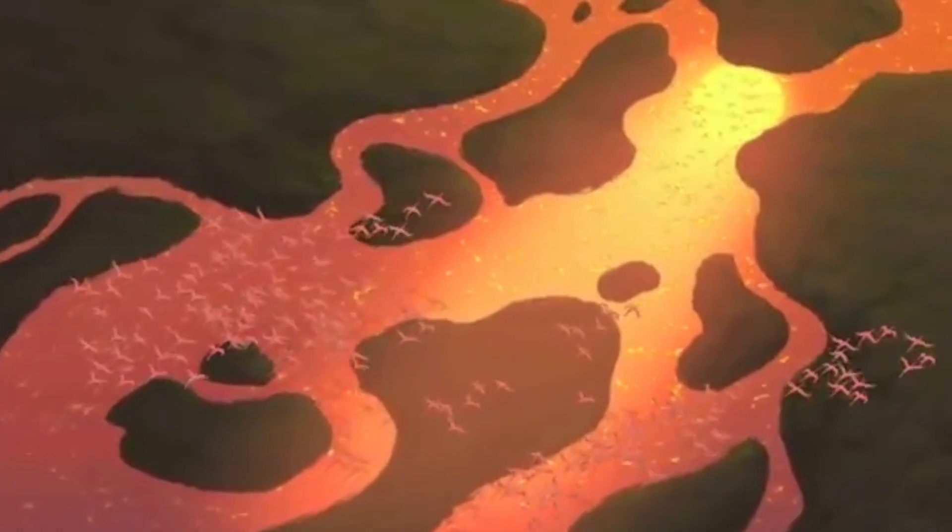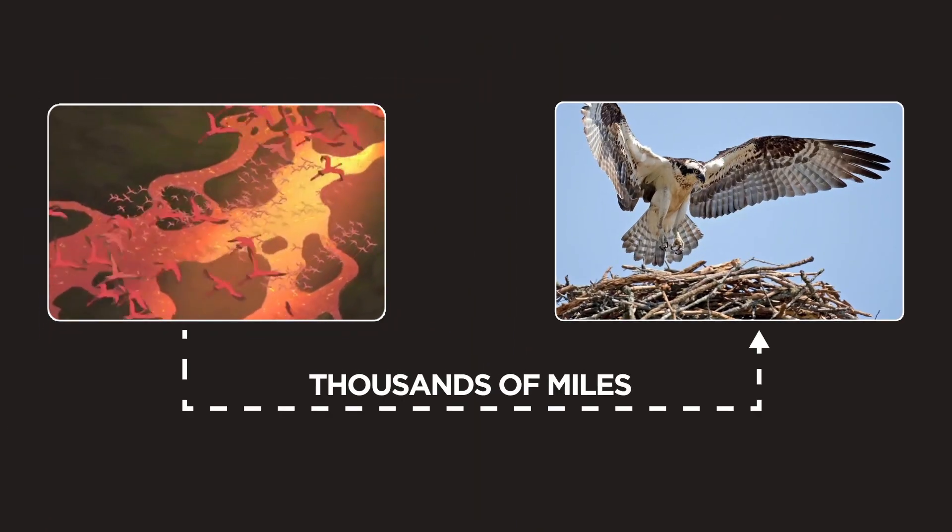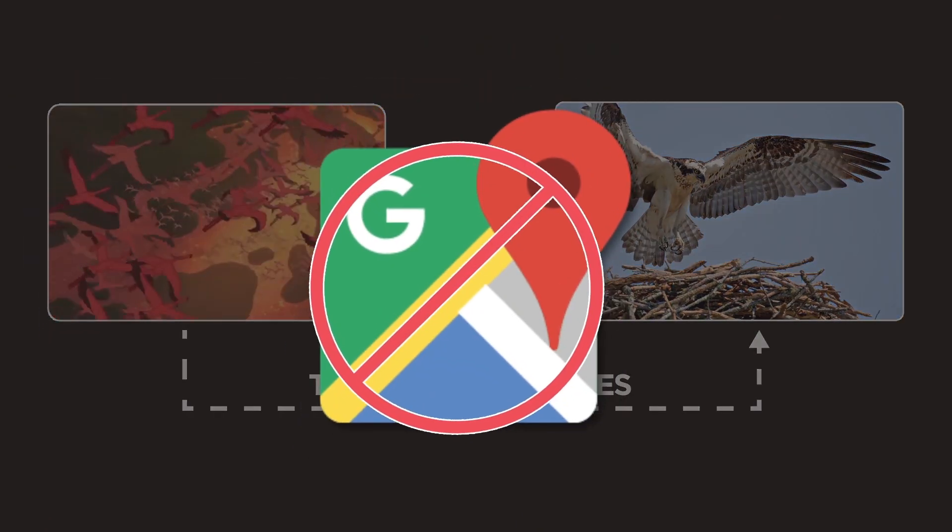But what about magnetism? A lot of animals migrate. Many species of birds, for example, can find their way back across thousands of miles to the exact same spot, without Google Maps.